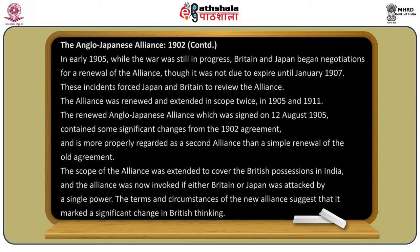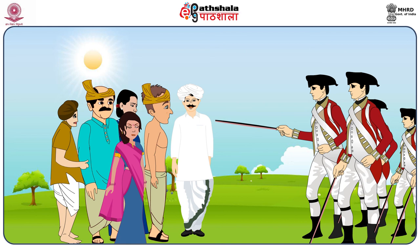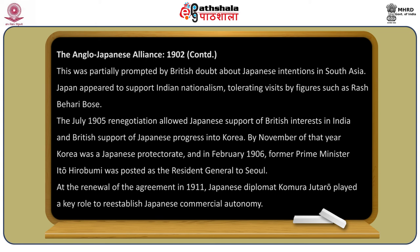The scope of the alliance was extended to cover British possessions in India, and the alliance was now invoked if either Britain or Japan was attacked by a single power. The terms of the new alliance suggest a significant change in British thinking, partly prompted by British doubts about Japanese intentions in South Asia. Japan appeared to support Indian nationalism, tolerating visits by figures such as Rash Bihari Bose.